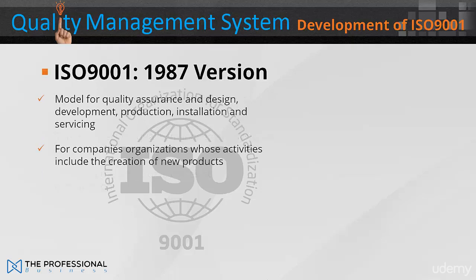The ISO 9001 1987, model for quality assurance in design, development, production, installation and servicing, was for companies and organisations whose activities included the creation of new products.